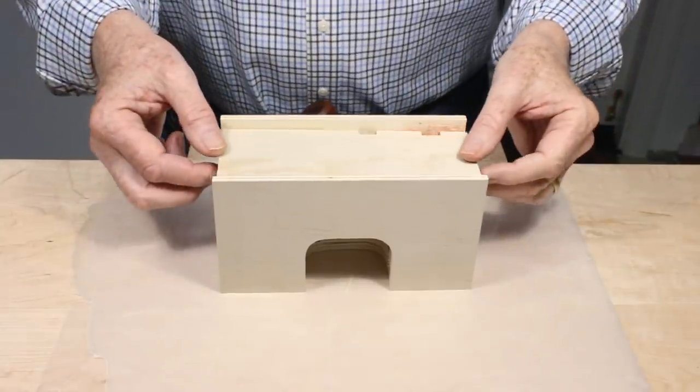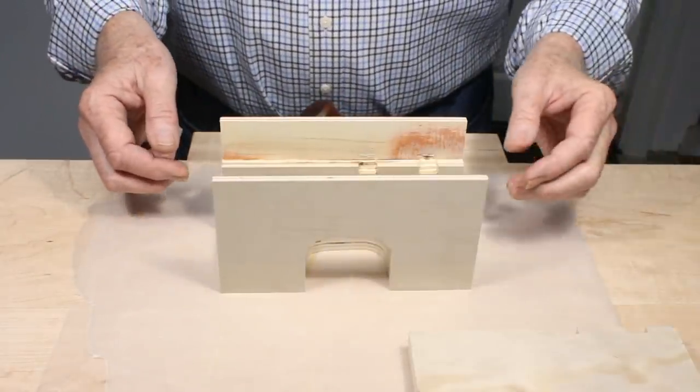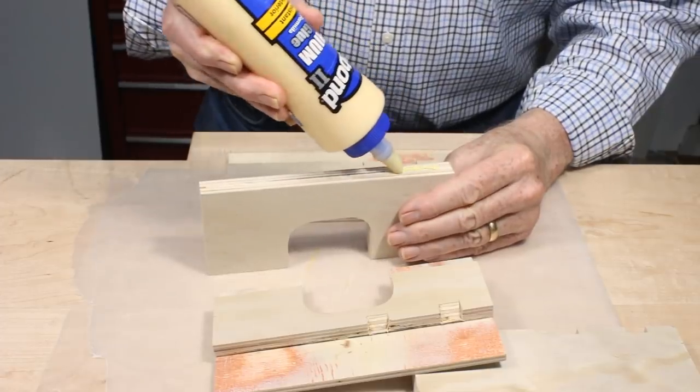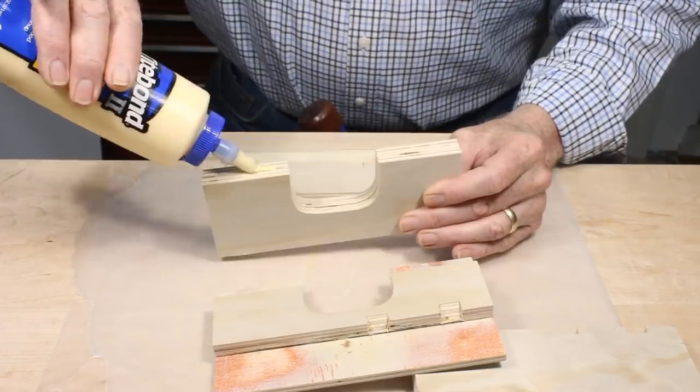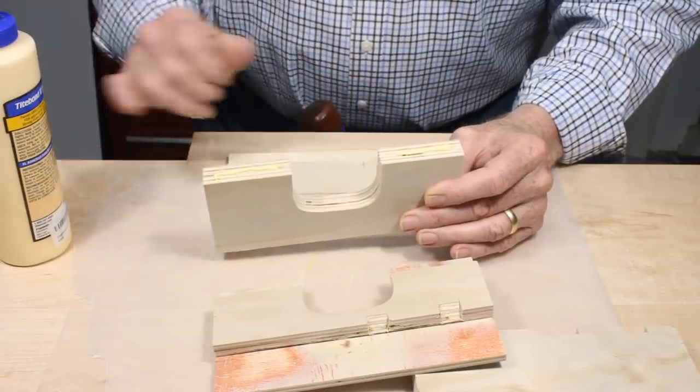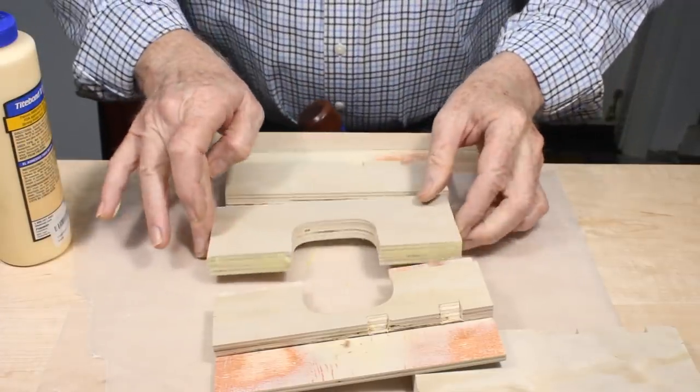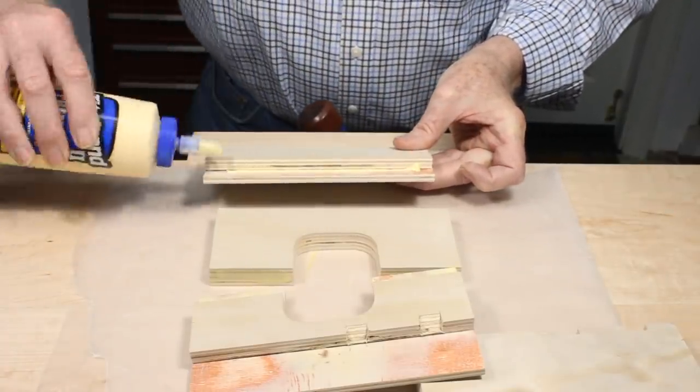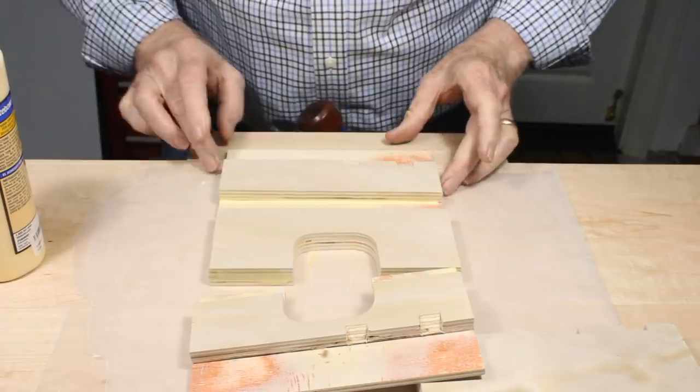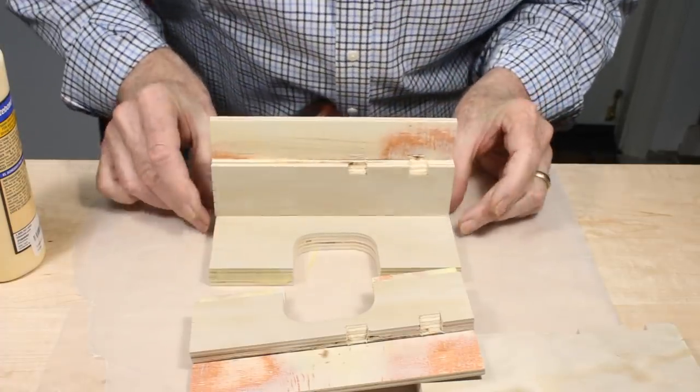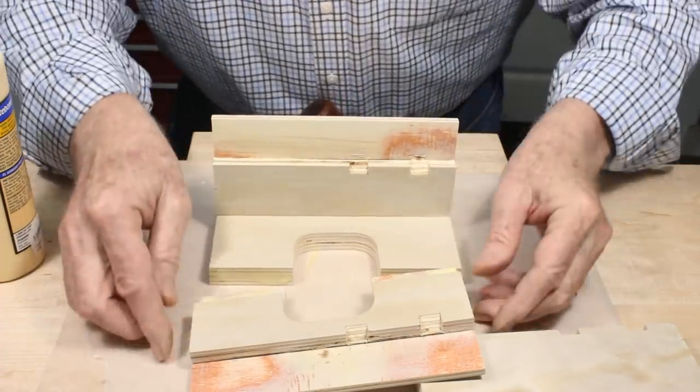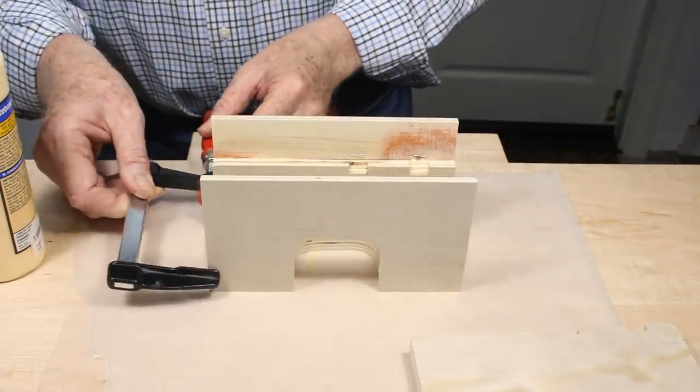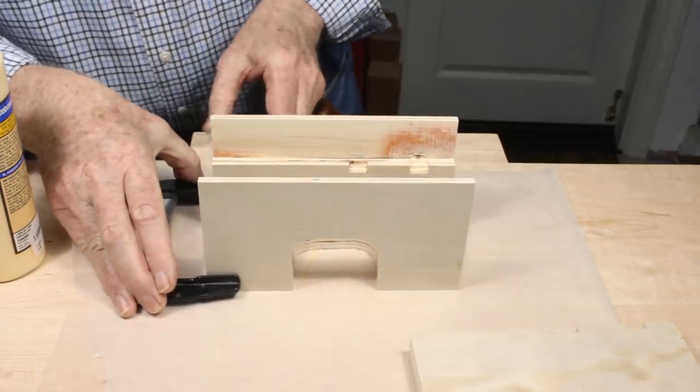Now we're ready to glue up the headstock. Lay out the pieces and double-check that they're all pointing the right way. Apply glue evenly to all the edges. Clamp it up and check that it's square.